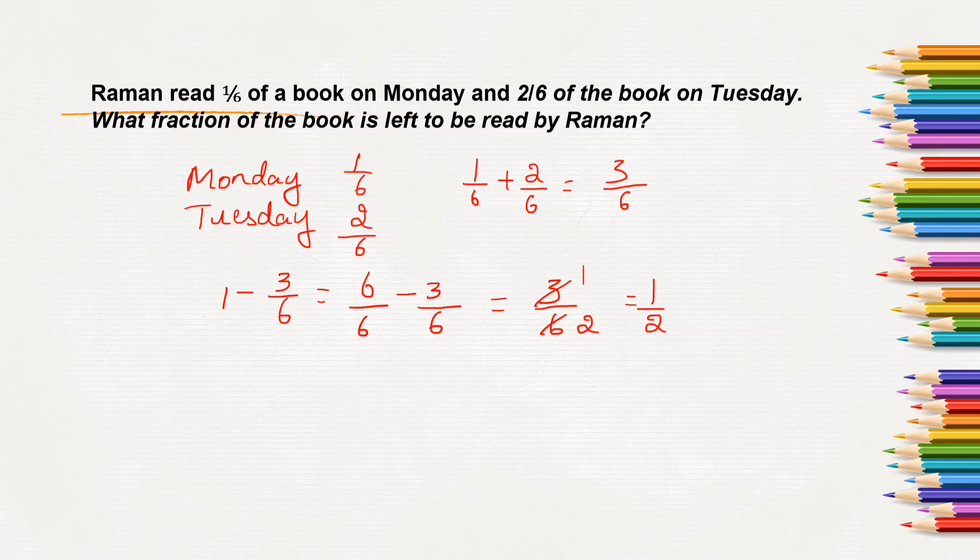So Raman has 1 by 2 of the book left to be read. He needs to read still 1 by 2 part of a book.